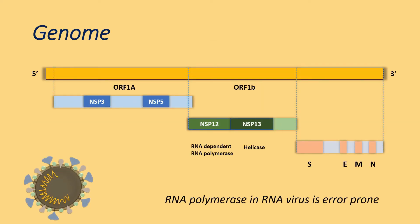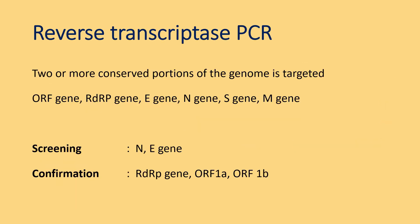The genomic material of SARS-CoV-2 codes for several structural and non-structural proteins. One of the key proteins is the RNA-dependent RNA polymerase, which is essential during the replication cycle. RNA polymerase is error-prone and is a key determinant of mutagenicity in SARS-CoV-2. In reverse transcriptase PCR, two or more conserved portions of the genome are targeted — commonly the ORF gene, RdRp, E, N, S, or M genes. N and ORF genes are usually used for screening, and confirmation is based on RdRp or open reading frame sequences.